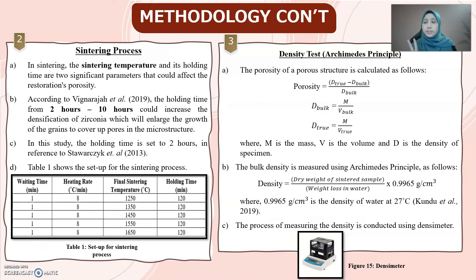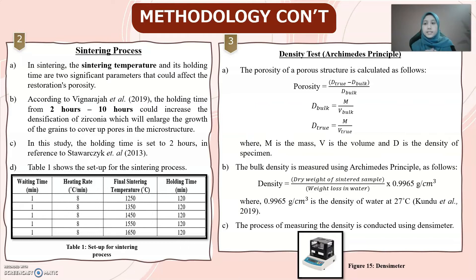The second step is the sintering process. The sintering temperature and its holding time are two significant parameters that could affect the porosity of the restoration. According to Vidraja, a holding time of 2 to 10 hours could increase the densification of zirconia, enlarging grain growth to cover pores in the microstructure. In this study, the holding time is set to 2 hours, in reference to Stawarzyg. Table 1 shows the setup for the sintering process, with a holding time of 120 minutes, equal to 2 hours.